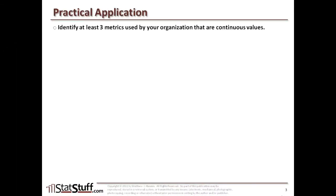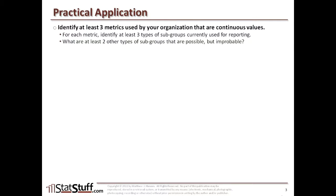Before we close this lesson, let's discuss how we can apply some of these concepts in a practical way. Try to identify at least three different metrics you use in your organization that use continuous values. For each of those metrics, identify at least three types of subgroups you're already using for your reporting — such as breakouts by time, location, or sub-processes. Then identify at least two other types of subgroups that are possible within the data, even if they seem improbable. Finally, consider how you can confirm whether those are natural or rational subgroups that should be separately measured, for example by running an ANOVA test to see if the p-value supports a real difference.